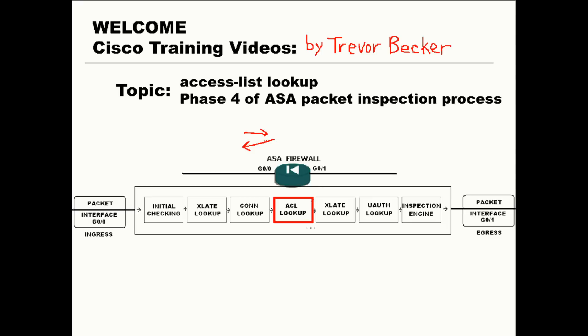By default, Access Lists are not created or applied to any firewall interfaces. Cisco ASA uses the default security policy of security levels in order to filter traffic.